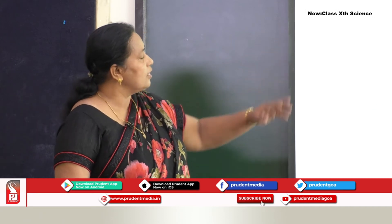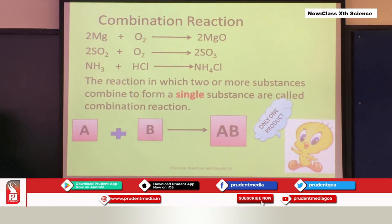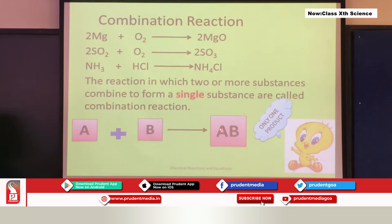If you look at the right-hand side, the product, there is only one product in all three chemical equations. Whereas the reactants — there are two reactants. Such reactions in which two or more reactants combine to give a single product are called combination reactions. If A and B are two reactants, they combine to give compound AB. The key word for combination reaction is just one product.